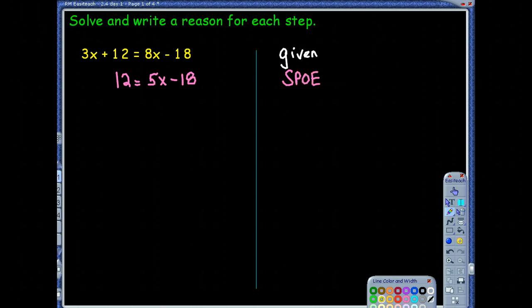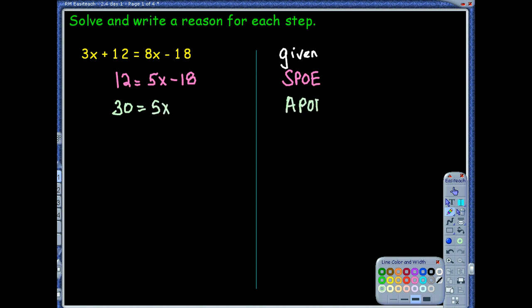When you are subtracting 3x on each side, we're going to use ESPO. Next step. I need to get all the constants to the left. So I'm going to add 18 to both sides. So 30 will equal 5x. And because I added to both sides, I'm going to use ESPO as my reason. Notice how it's lined up. After I did the step, I immediately write down my reason.